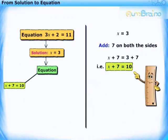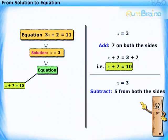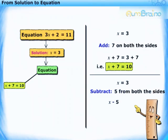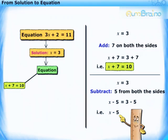Let us now perform a different mathematical operation on the same solution, x is equal to 3. For example, subtract 5 from both the sides. We get x minus 5 is equal to 3 minus 5. That is, x minus 5 is equal to minus 2.